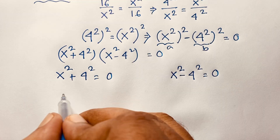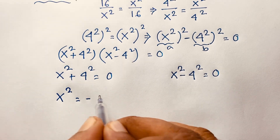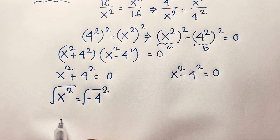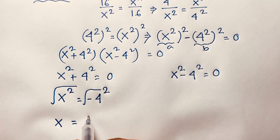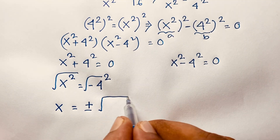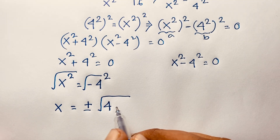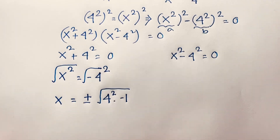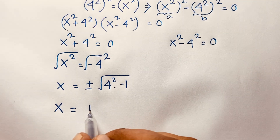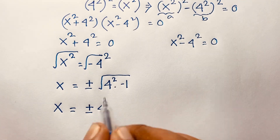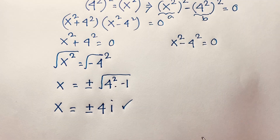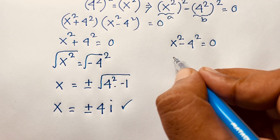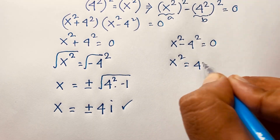For case one, x squared plus 4 squared equals 0, so x squared equals negative 4 squared. Taking the square root of both sides, x equals plus or minus the square root of negative 16, which is the square root of 4 squared times negative 1. Since the square root of negative 1 is i, our solution is x equals plus or minus 4i.